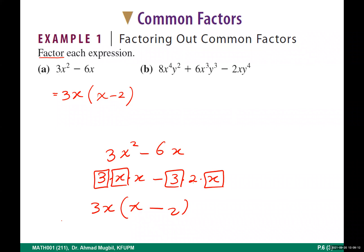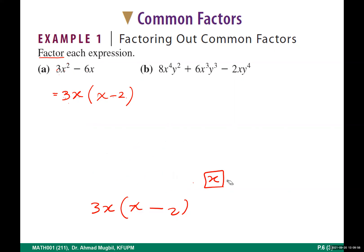When you factor out you are not taking the LCD; you take the GCF — the greatest common factor. What remains inside the bracket is what is not common. You can think of it as division: after factoring out 3x, divide the first term by 3x and the second term by the common factor. 3x² ÷ 3x = x, and −6x ÷ 3x = −2. This is the reverse — the inverse operation of multiplying.